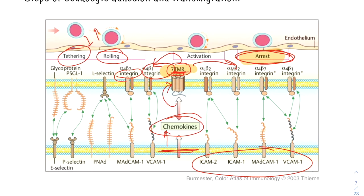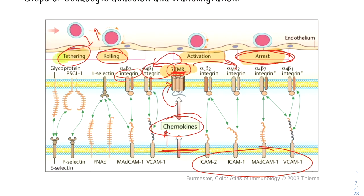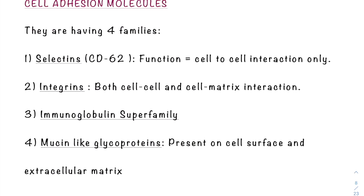To summarize, the steps of leukocyte adhesion are: tethering, rolling, activation, and arrest. To understand these steps completely, we need to know what cell adhesion molecules are and their various types.